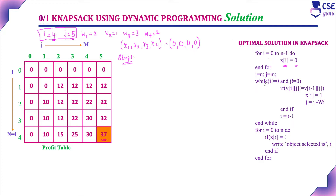Next, check the condition: while i is not equal to 0 and j is not equal to 0. If this condition is true, execute the loop. If v[i, j] is not equal to v[i minus 1, j], then xi is selected. Apply j equal to j minus w[i] — this weight is deducted from the maximum capacity, and j becomes the remaining capacity. After executing this, set i equal to i minus 1 and continue the loop.